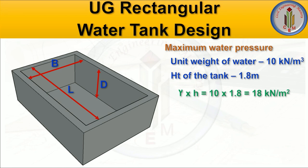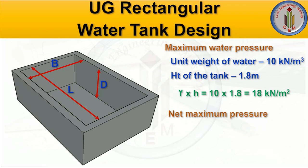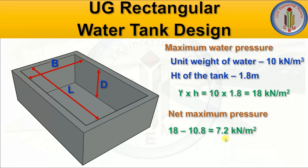Next, we find the maximum water pressure. Unit weight of water is 10 kN/m³ and height of the tank is 1.8 m, so maximum water pressure = 10 × 1.8 = 18 kN/m². Now we find the net maximum pressure. In Case 1, soil pressure acts on the outer side and water pressure on the inner side, so we deduct water pressure from soil pressure: 18 − 10.8 = 7.2 kN/m².